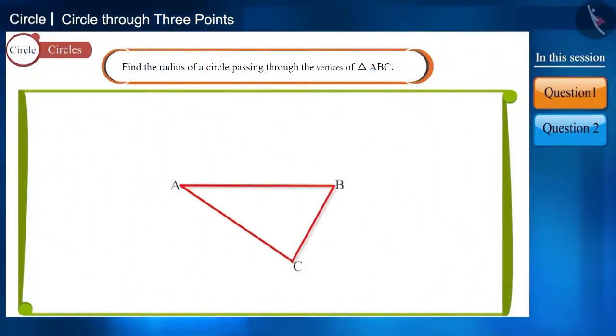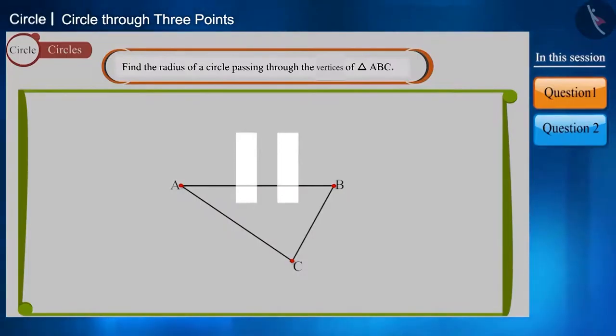Here we have a triangle ABC. Can you find the radius of a circle passing through its vertex points? You can pause the video and try to solve this.